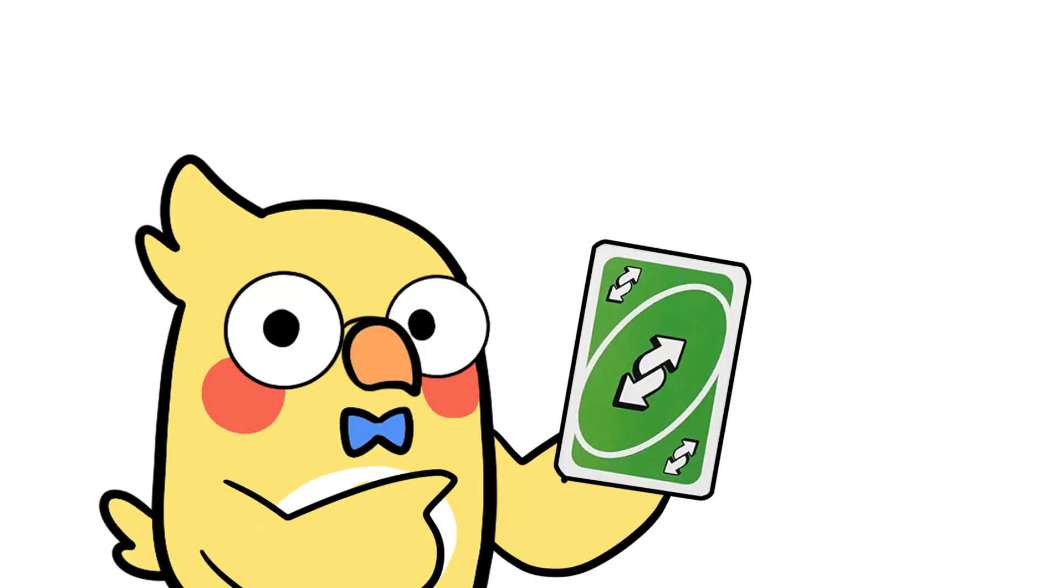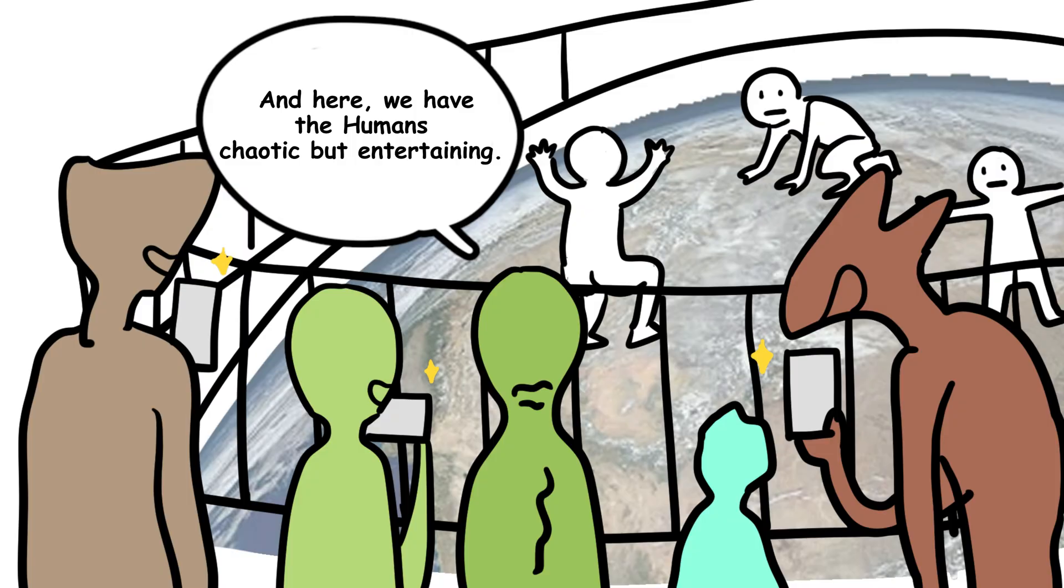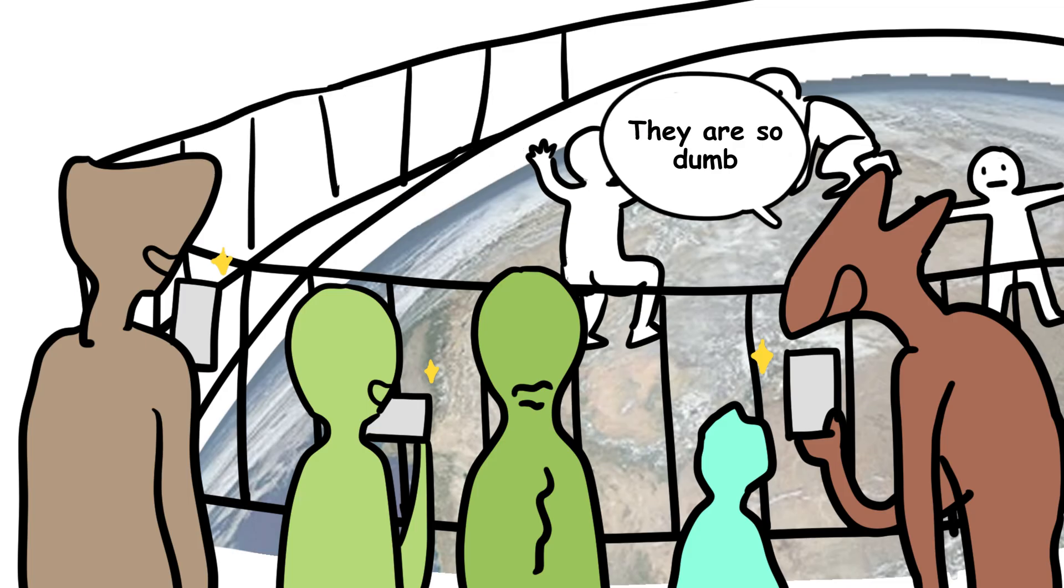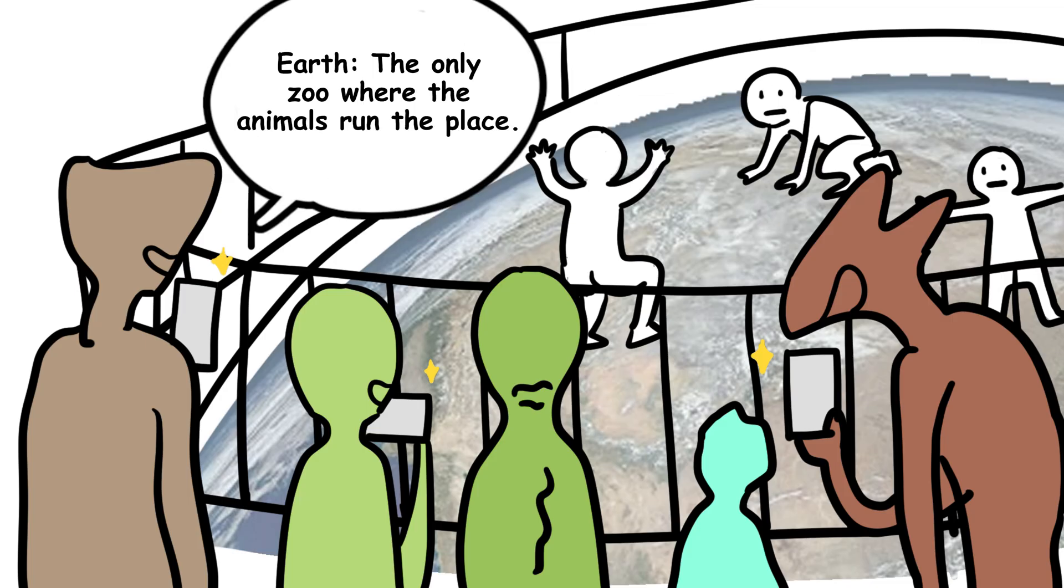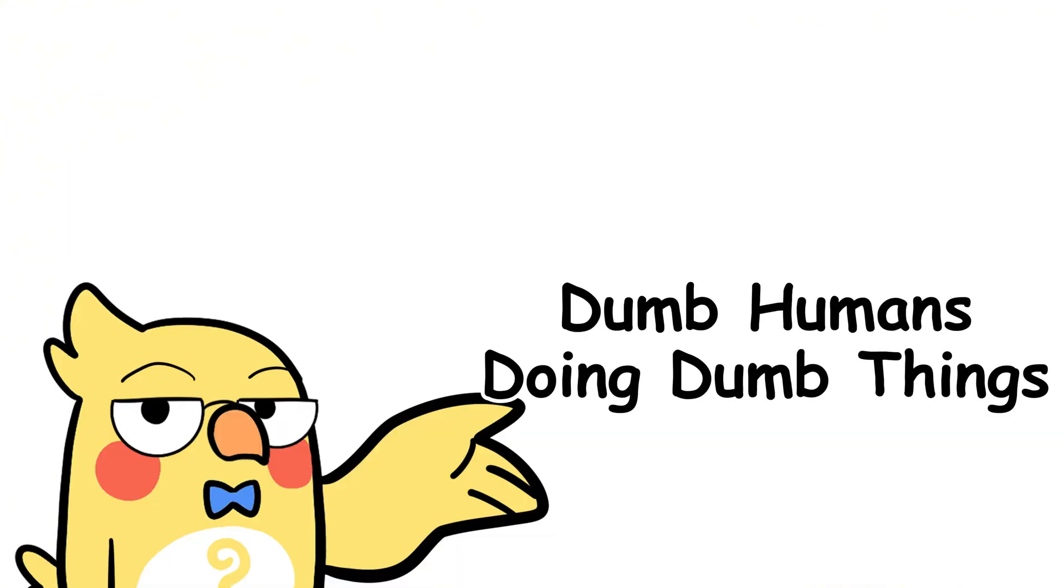Now flip it. What if we are the ants? And aliens are so advanced that they don't even bother talking to us. Or worse, they are watching us but treating us like an intergalactic zoo. Maybe there's an entire alien civilization watching us, like a reality show called Dumb Humans Doing Dumb Things.